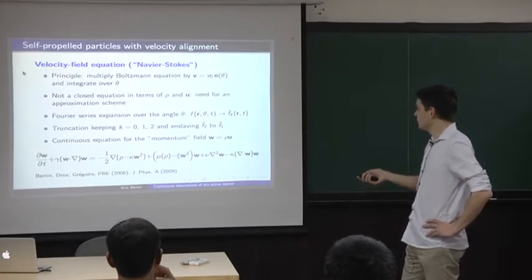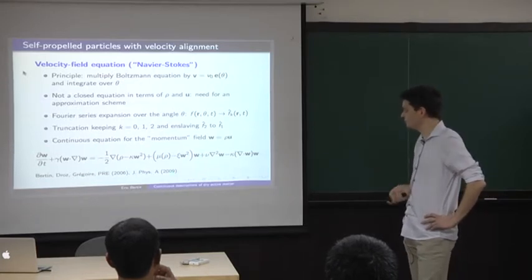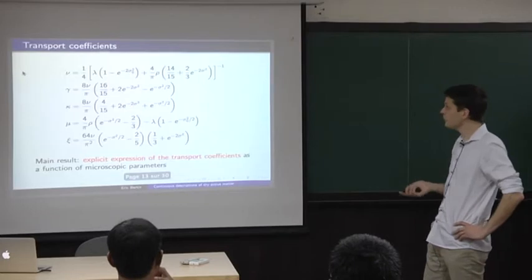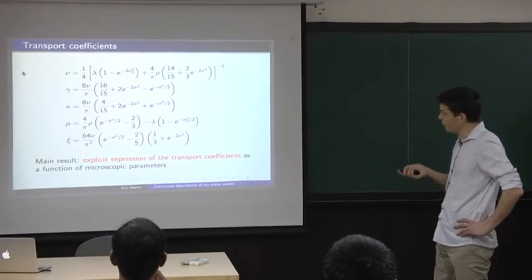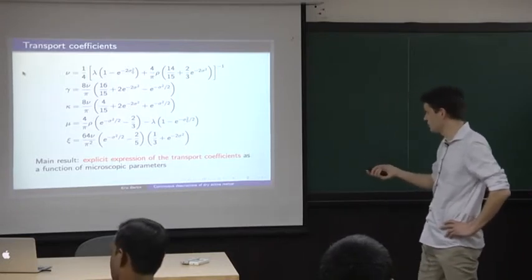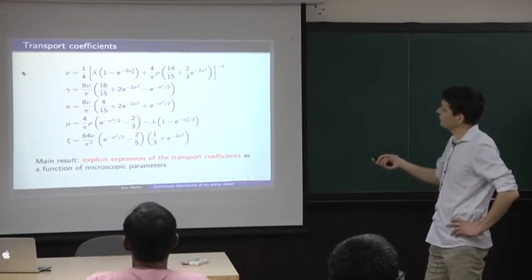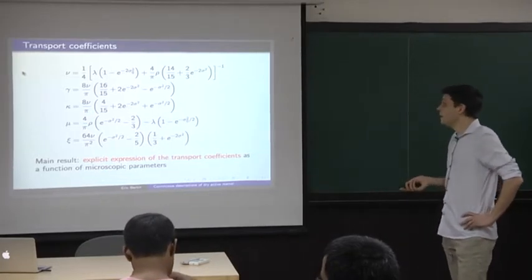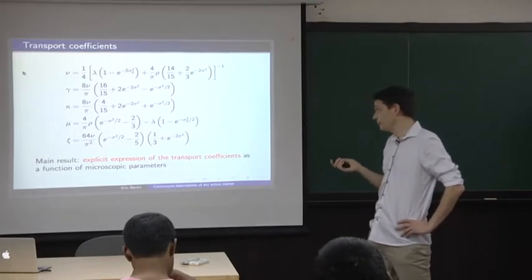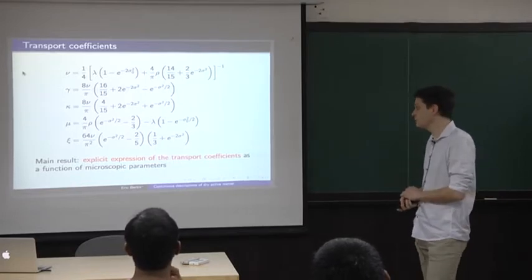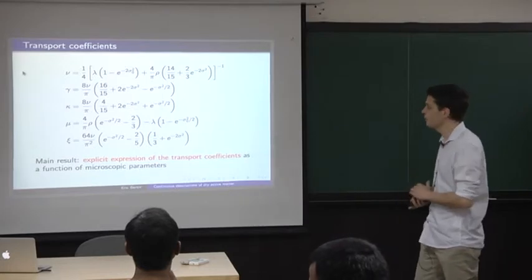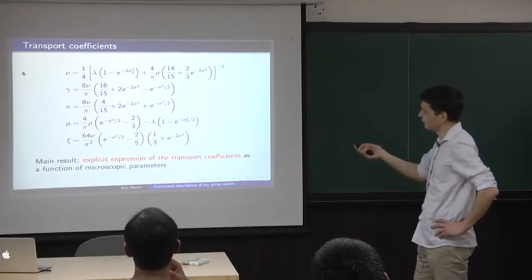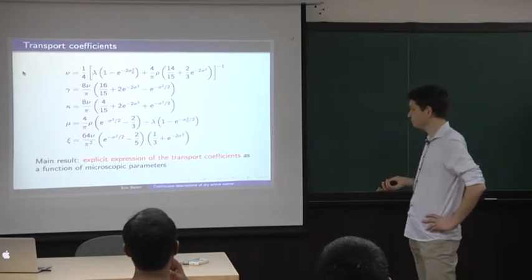We know all the coefficients appearing in the equation as a function of the microscopic parameters, which are basically the noise amplitude sigma and the local density. It is very convenient to have these expressions for the transport coefficients as a function of microscopic parameters, because it reduces the number of parameters in the problem. So instead of having five unknown parameters, you have only two — sigma and the density.